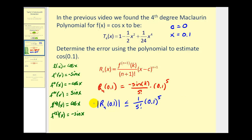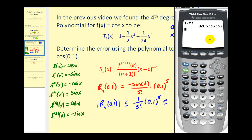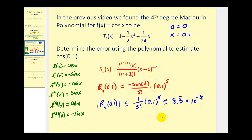Let's go to the calculator to evaluate this. We have one divided by five factorial, then multiply by 0.1 to the fifth. The error is extremely small — this is 8.3 repeating times 10 to the negative eighth power. In decimal notation, that's 0.000000083 repeating. This tells us that using this Maclaurin polynomial to approximate cosine of 0.1 is extremely accurate.